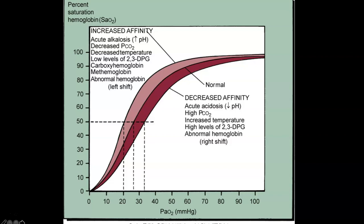Some of the main components that affect the oxyhemoglobin dissociation curve are the pH, CO2, and 2,3-DPG. There are also other factors such as carboxyhemoglobin, methemoglobin, and abnormal hemoglobin levels. All of these are additional components that can affect our oxyhemoglobin dissociation curve.